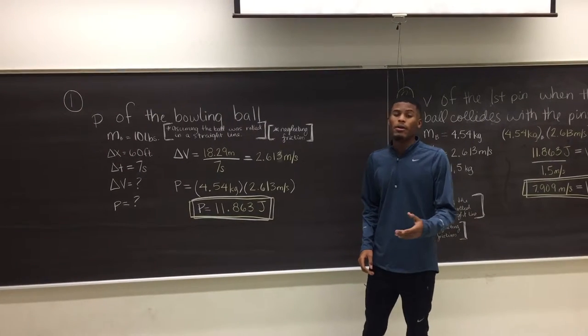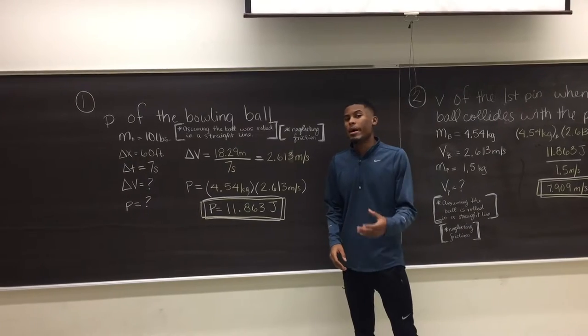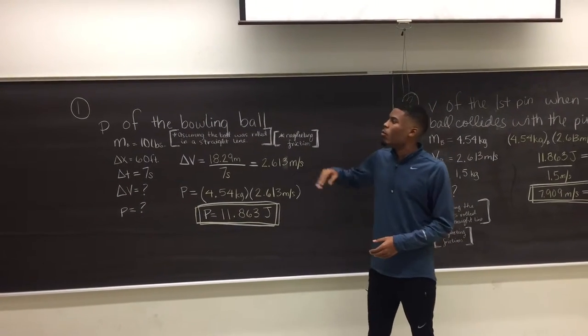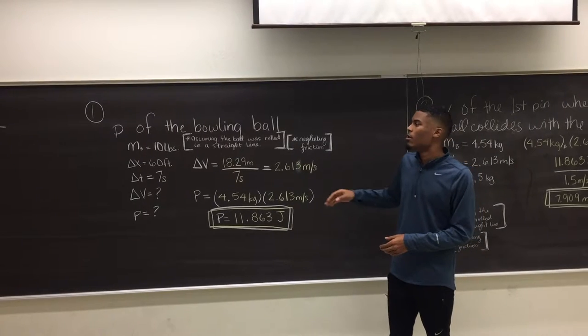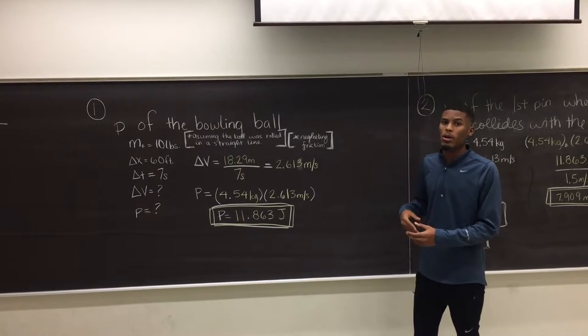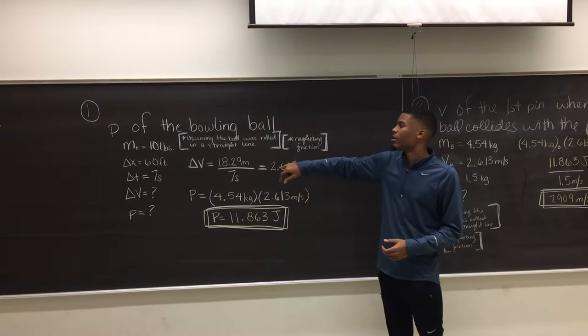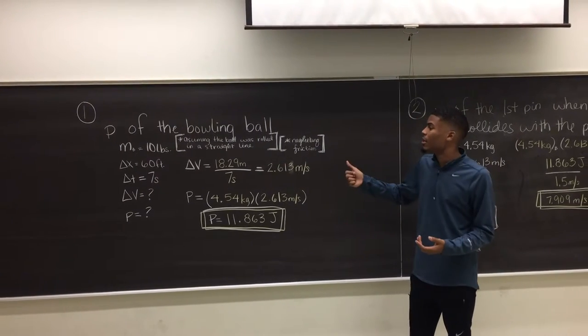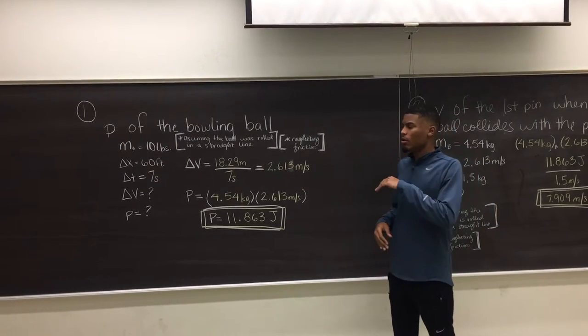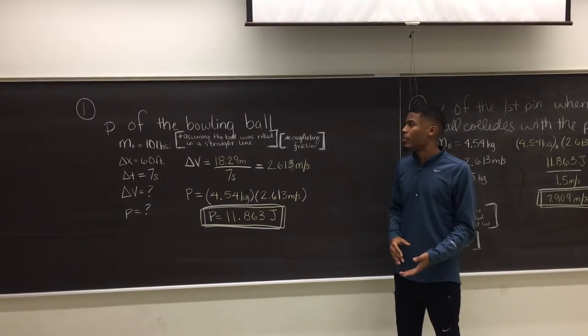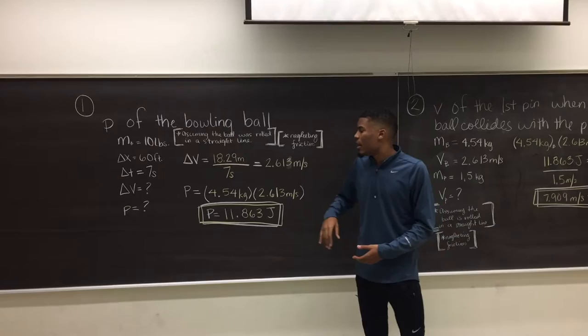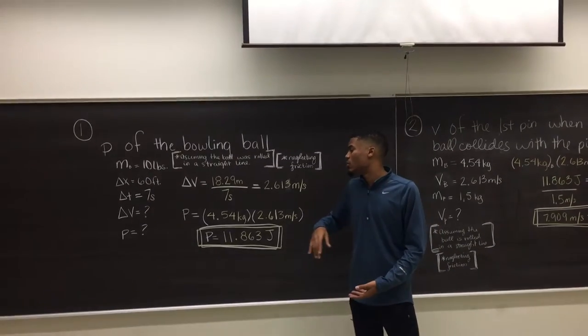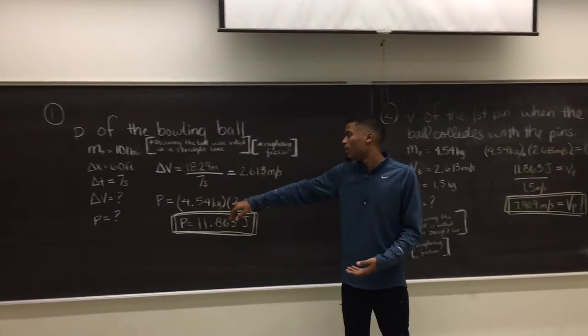Alright guys, so as we explained earlier, momentum is equal to mass times velocity. With this example we're going to do here, we're going to try to figure out the momentum of the bowling ball when the guy bowled his ball. And we're doing this assuming that the ball is rolled in a straight line and neglecting friction. So, we know that the guy used a 10 pound ball. Using some simple math, we're actually able to figure out that the 10 pounds is roughly 4.54 kilograms.